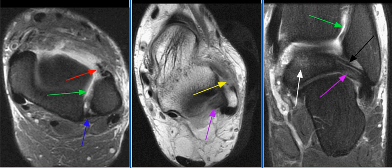This case is a 35-year-old male with ankle pain after a soccer injury. The MRI examination shows a torn anterior syndesmotic ligament.